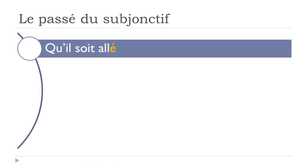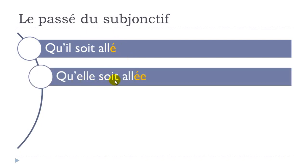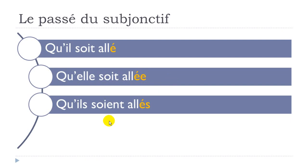For verbs requiring être, like aller: qu'il soit allé — the participe passé takes the mark of gender and number. Qu'elle soit allée (feminine: add -E), qu'ils soient allés (plural: add -S), qu'elles soient allées (feminine plural: add -ES). Phonetically all sound the same as 'allé', but you must write the endings.